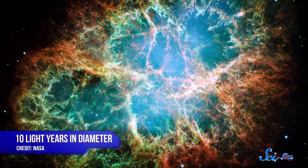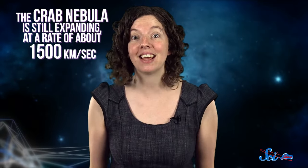The Crab Nebula is bright and huge, around 10 light years in diameter. To put that into perspective, the entire solar system is between one and two light years in diameter, depending on where you draw the edge. And the Crab Nebula is still expanding, at a rate of about 1,500 kilometers per second.